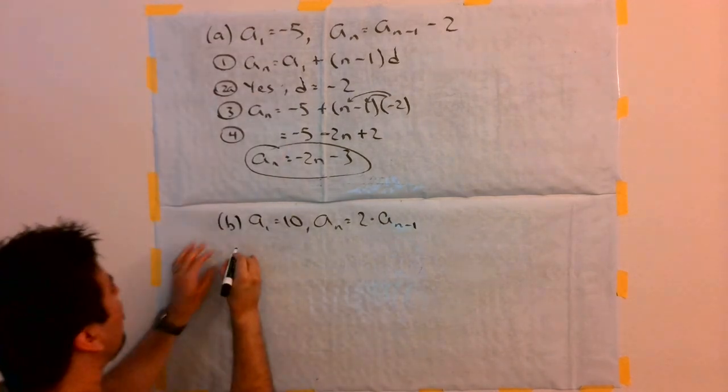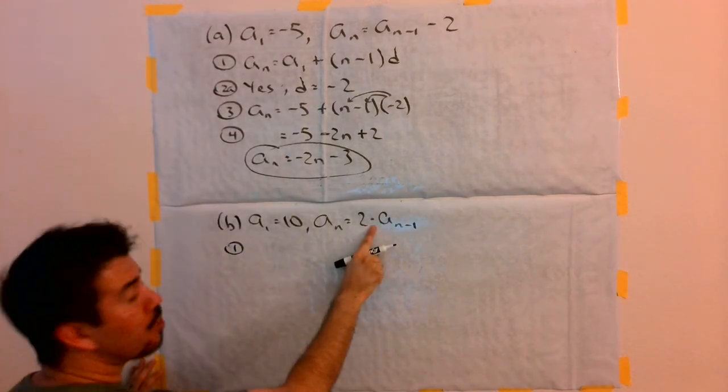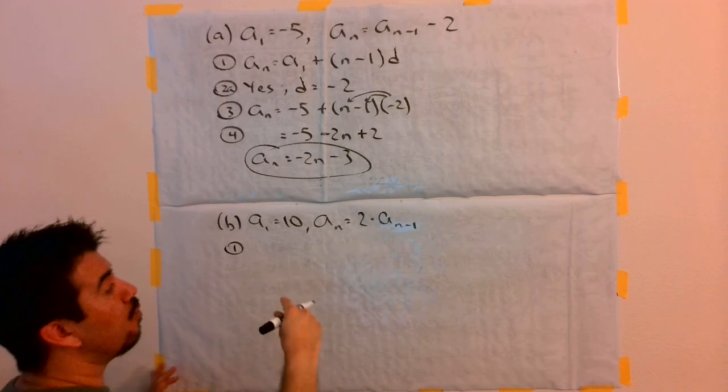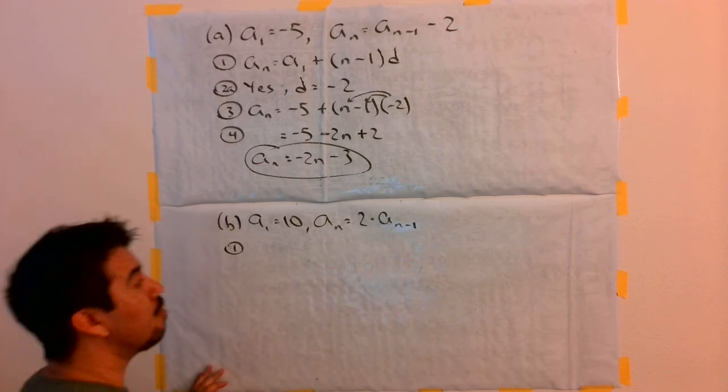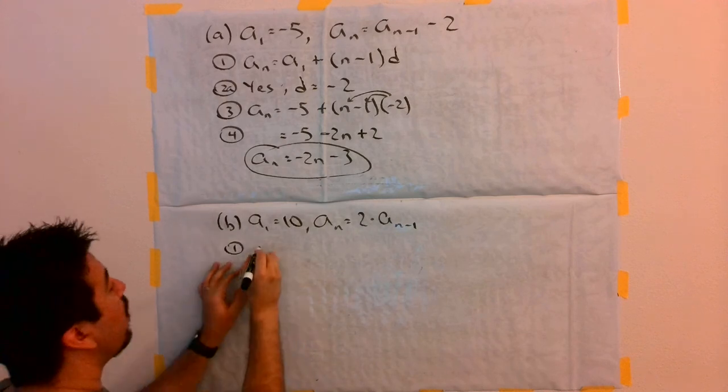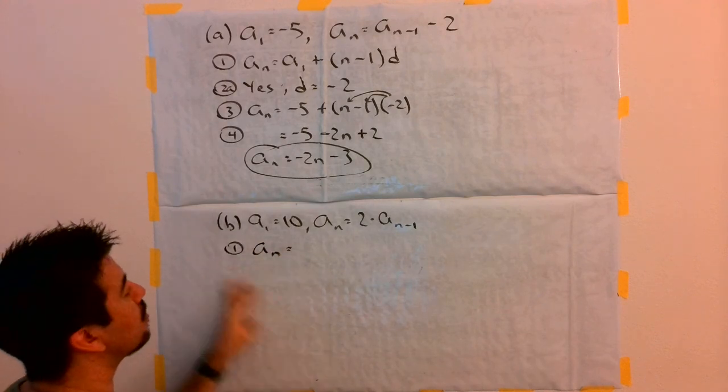Now, we're going to rewrite the explicit rule. In this case, since we have multiplication going on, this is an example of a geometric sequence. I'm going to write the explicit rule for a geometric sequence.